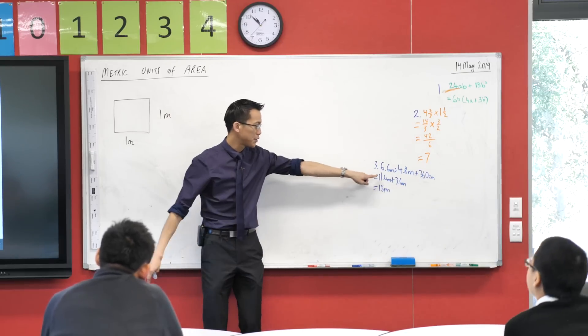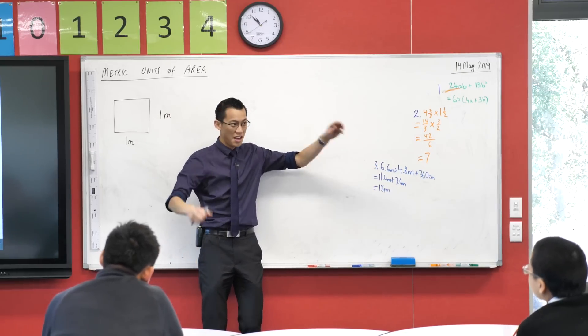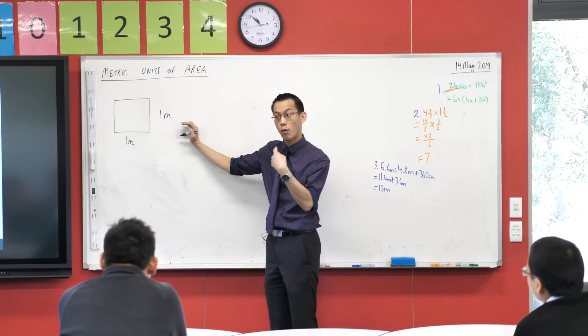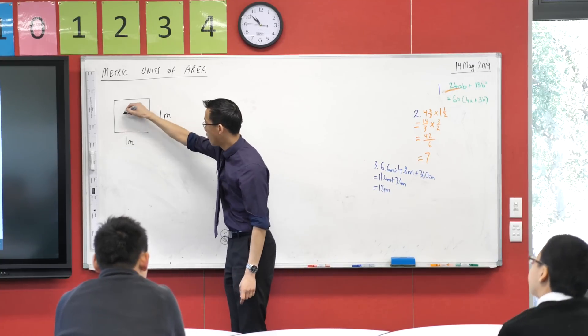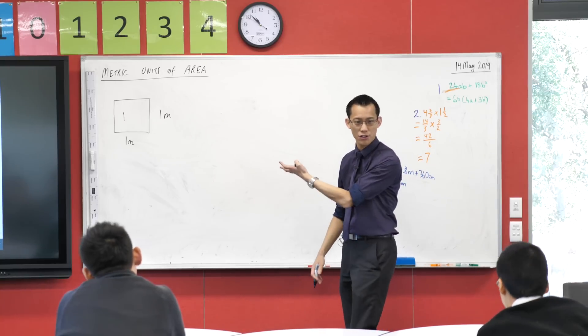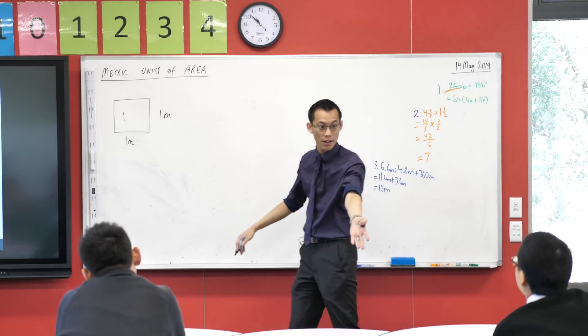Now, just like before, I emphasized the units here with Krishan, right? Units are so important. When we multiply these two lengths together, we multiply the units as well. We get one from the numbers, one times one, but instead of saying metres, what's my unit for area here? Metres squared. Very good.